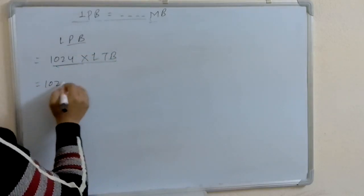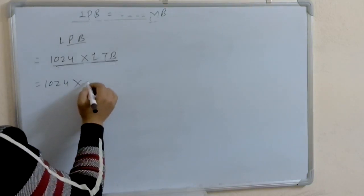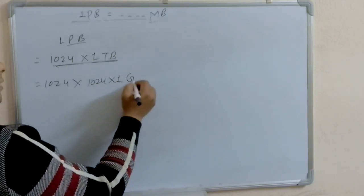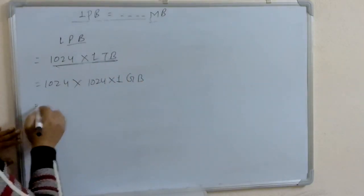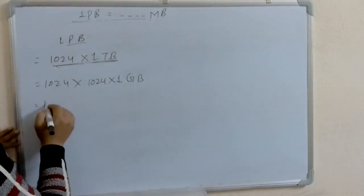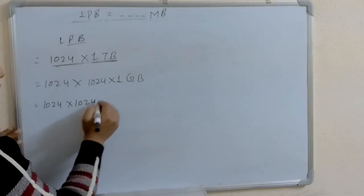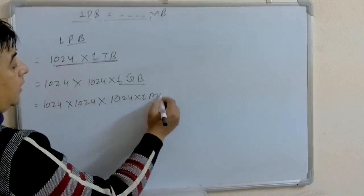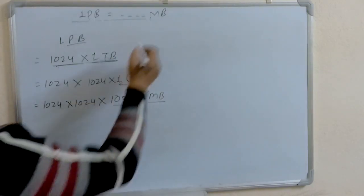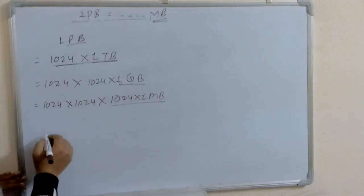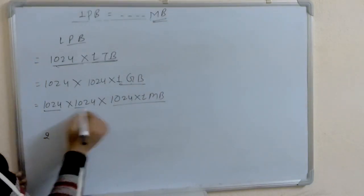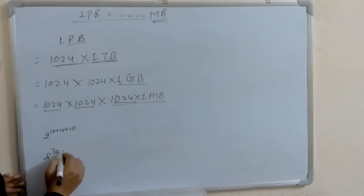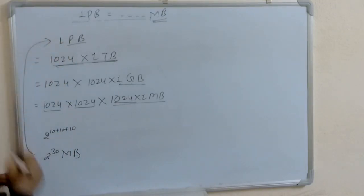Now leave it as it is and break down one terabyte. One terabyte is equal to 1024 GB. We have to break down only up to MB, so: 1024 into 1024 into 1024 into one MB is equal to one GB. That gives us two power ten, plus ten plus ten, so two power 30 MB is equal to one petabyte.